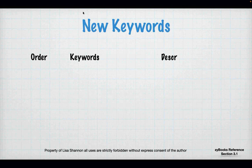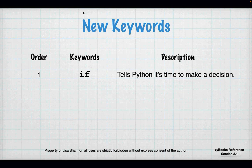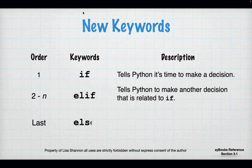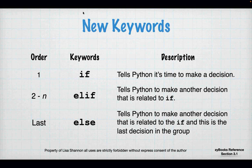We have some new keywords. The order matters here — these have to happen in an order. 'If' tells Python that you're about to ask it a question. The second keyword is 'elif' — if is always first, elif can be second, and elif says: I'm going to make another decision but it's going to be related to the if. Then the very last thing, if you need it, is 'else'. Basically else says: if none of this other stuff evaluates to true, do what I tell you to do. Those are the three new keywords, and that's their order.